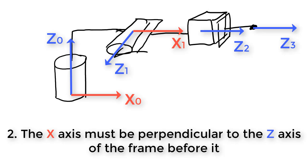Applying rule two to frame two: x2 has to be perpendicular to z1. It can't come out of or go into the page because that would be parallel with z1, and it can't go right or left because that would be parallel to its own z-axis. So the only options are up or down — I'll choose up. For frame three, x3 must be perpendicular to z2, so I can choose up, down, into or out of the page. I'll choose up, because keeping axis directions the same as the last frame simplifies the math.